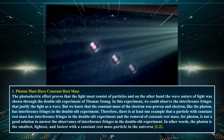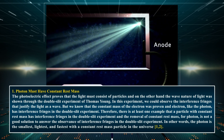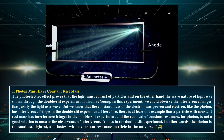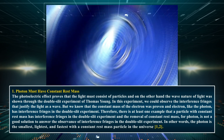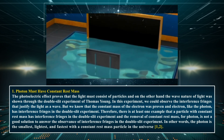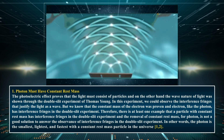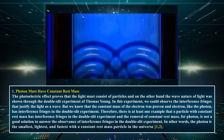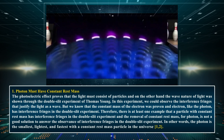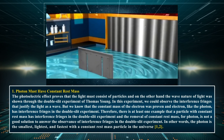Photon must have constant rest mass. The photoelectric effect proves that light must consist of particles. On the other hand, the wave nature of light was shown through the double slit experiment of Thomas Young, where we could observe interference fringes that justify light as a wave. But we know that the constant mass of the electron was proven — an electron, like the photon, has interference fringes in the double slit experiment. Therefore, there is at least one example that a particle with constant rest mass has interference fringes in the double slit experiment, and the removal of constant rest mass for the photon is not a good solution to answer the observance of interference fringes.